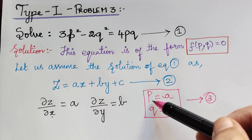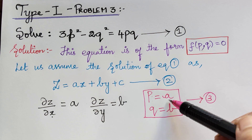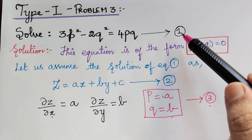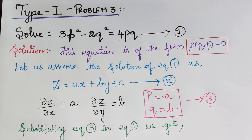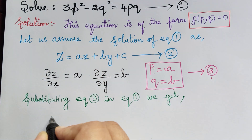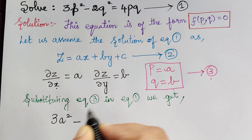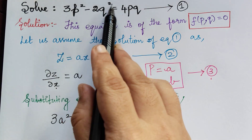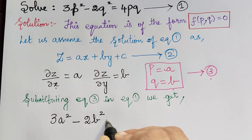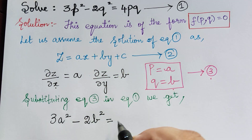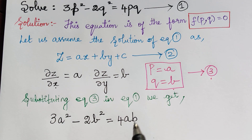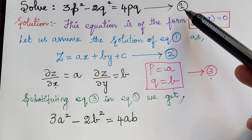After this, we substitute the values of p and q as a and b in equation 1. Substituting equation 3 in equation 1, we get 3a² minus 2b² equals 4ab. This is the equation obtained after substituting equation 3 in equation 1.